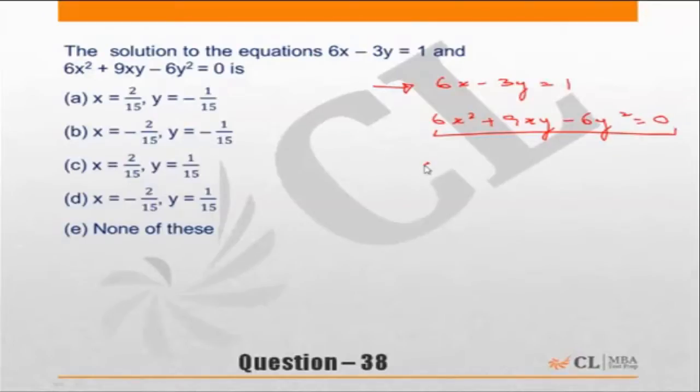So let's check with respect to the first equation 6x minus 3y equal to 1. Let's check for choice A. 2 by 15 and minus 1 by 15. So if you put x equal to 2 by 15, choice A then becomes 12 by 15 minus 3 into minus 1 by 15 plus 3 by 15 which is equal to 15 by 15 equal to 1. So this satisfies the first equation.